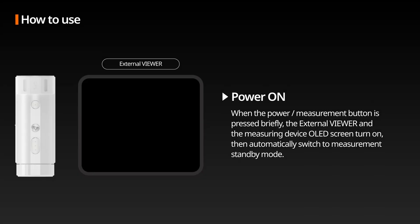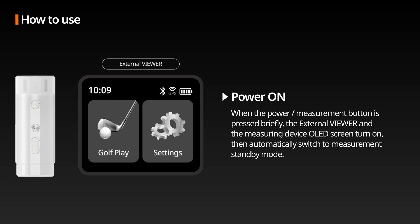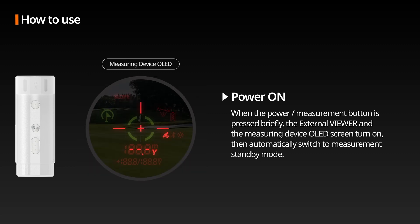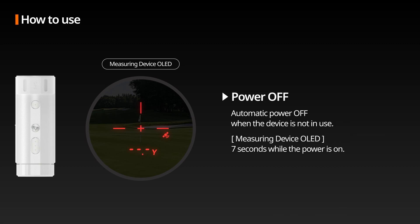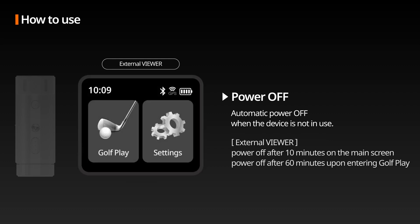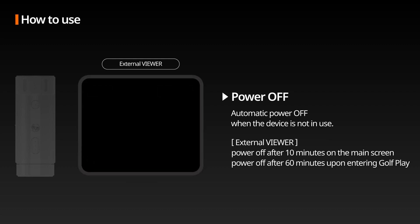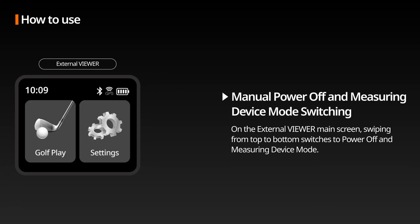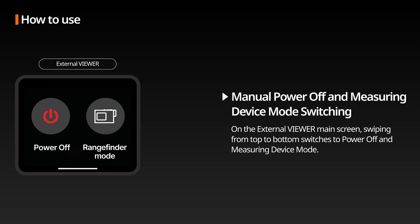Power On: When the power measurement button is pressed briefly, the external viewer and measuring device power on and switch to measurement standby mode. Power Off: If the device is not operated for a certain period, it will automatically turn off. Please check the automatic power off time in the external viewer. Manual Power Off: On the external viewer main screen, swiping from top to bottom switches to power off and measuring device mode.